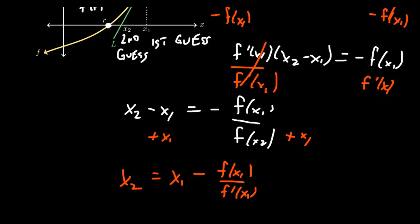Well, then the left-hand side, those divisors cancel out, we end up with x2 minus x1 equals negative f of x1 over f prime of x1. And then the last thing to do is add x1 to both sides of the equation. And we get that x2 equals x1 minus f of x1 over f prime of x1. There you go.